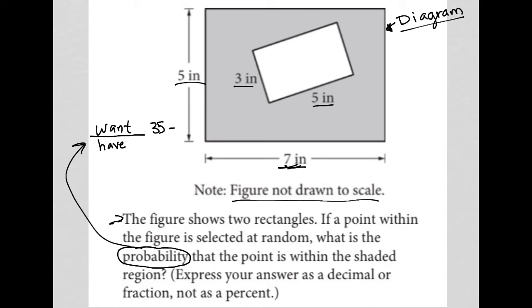But I have to subtract the area of the unshaded region, right? So 5 times 3, which is 15, so minus 15, which equals 20. So my numerator is 20.